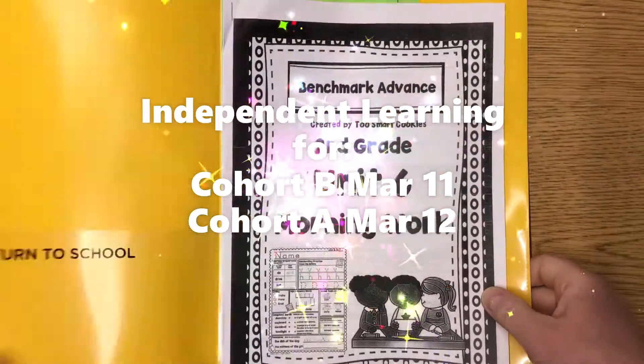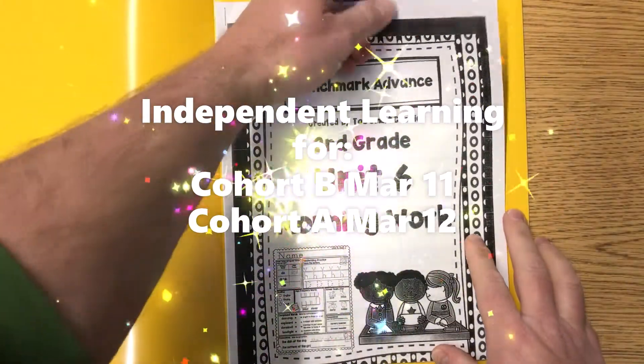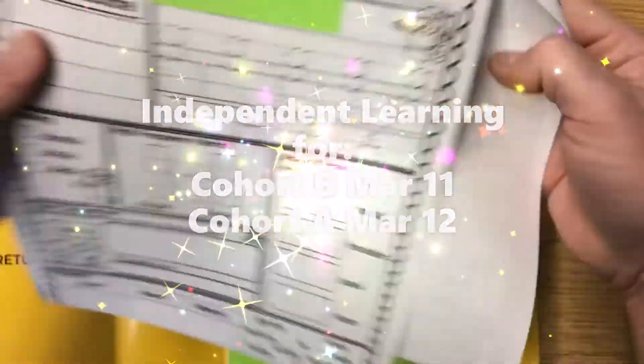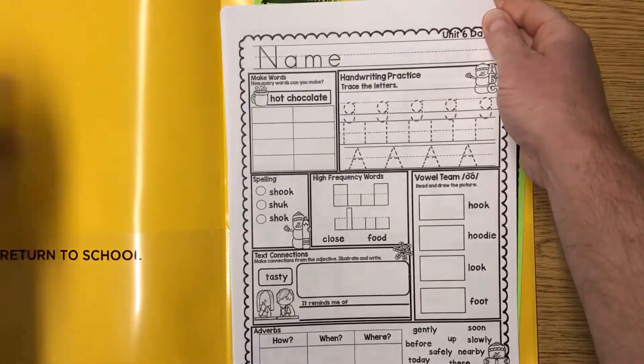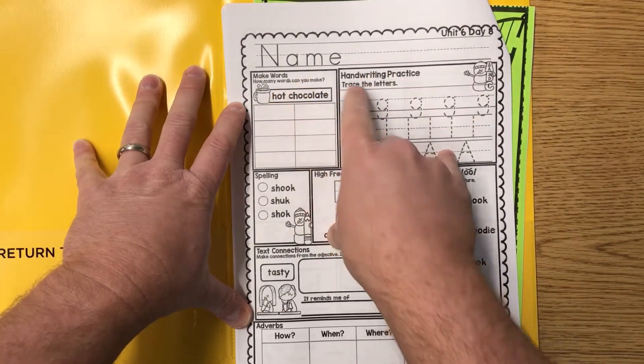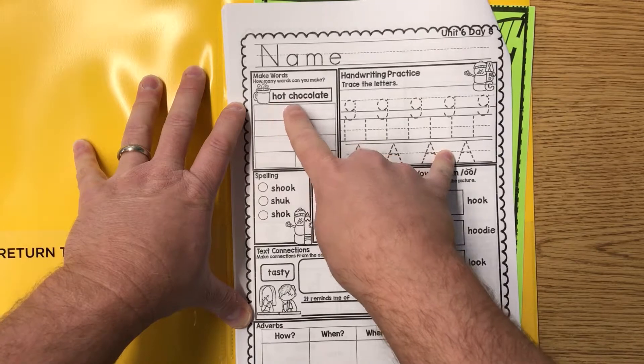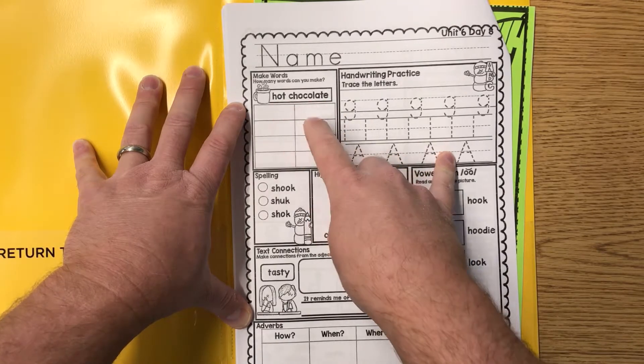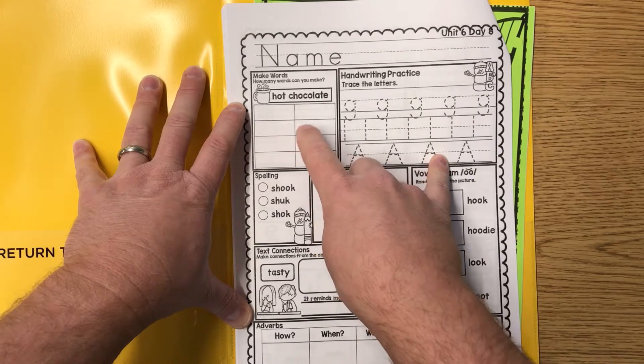Okay, here's your independent learning today. Let's go and look at Benchmark Advanced, and you may work on page eight. Go ahead and print your name neatly on the line. Make words - how many words can you make from the word 'hot' and the word 'chocolate'? Well, hot and chocolate are two, right? Can you figure out some more just using the letters?